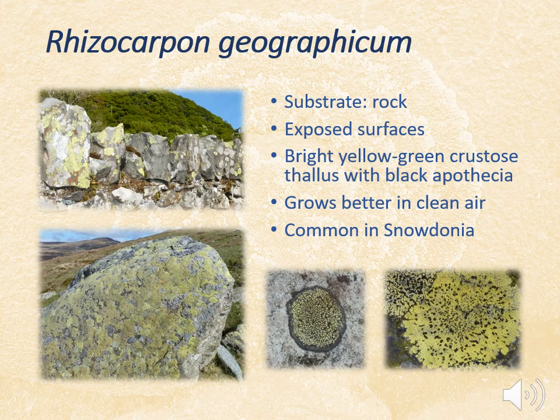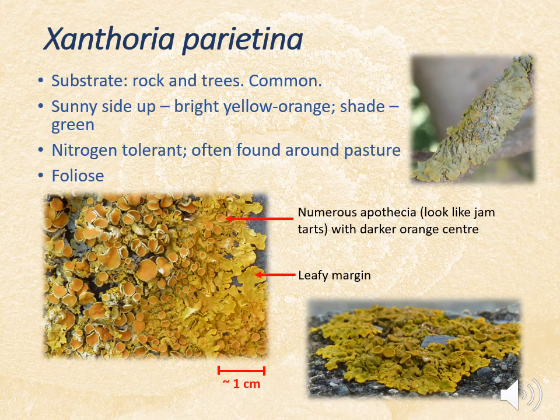Rhizocarpon geographicum, or the map lichen, is a very familiar crustose species found throughout Snowdonia — very characteristic with its bright yellow-green thallus and black apothecia. You'll often see it growing on very exposed rock surfaces, and it grows much better in clean air, which is why it does so well in Snowdonia. In more urban environments it may not look quite so healthy, perhaps not as bright green and with fewer apothecia.